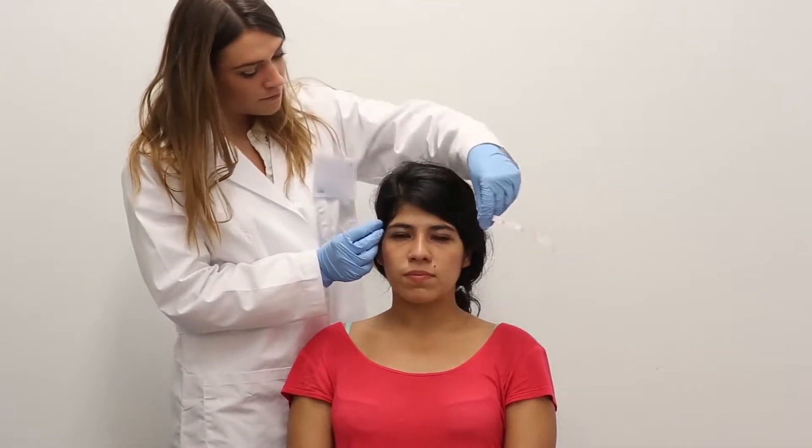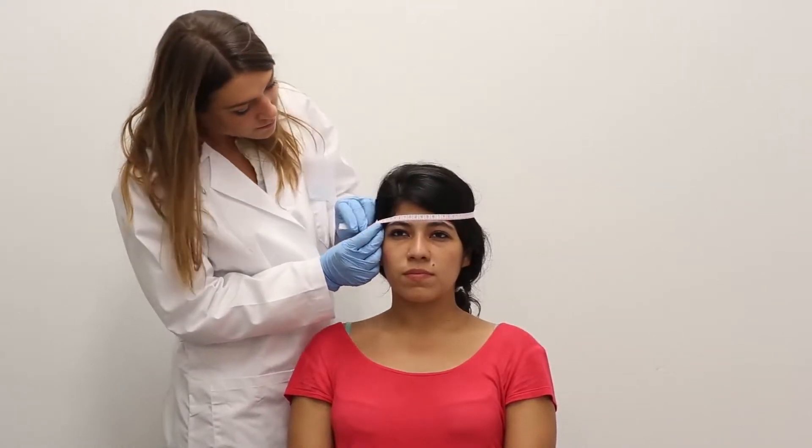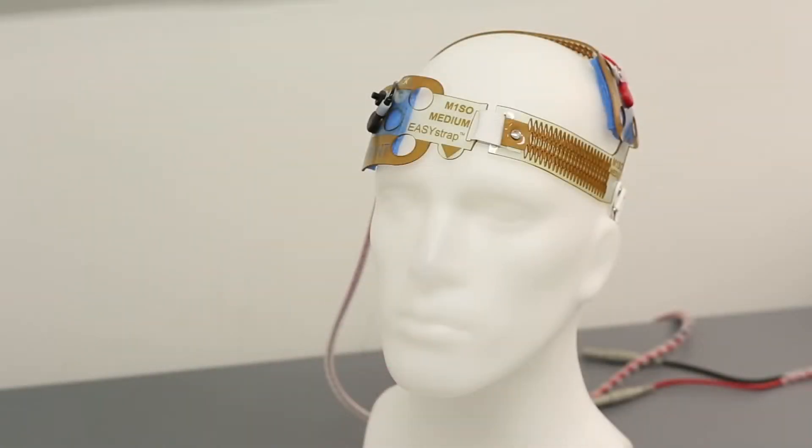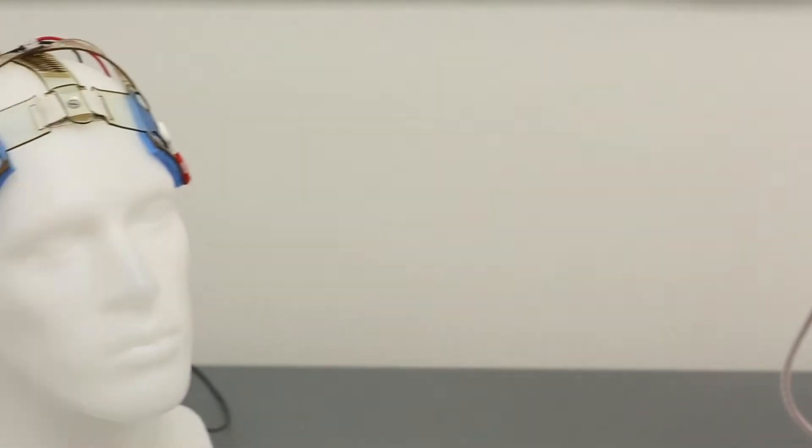Setup begins by first measuring the subject's head circumference to determine the appropriate size of the headgear to be used. There are different sizes of headgear depending on the electrode montage.